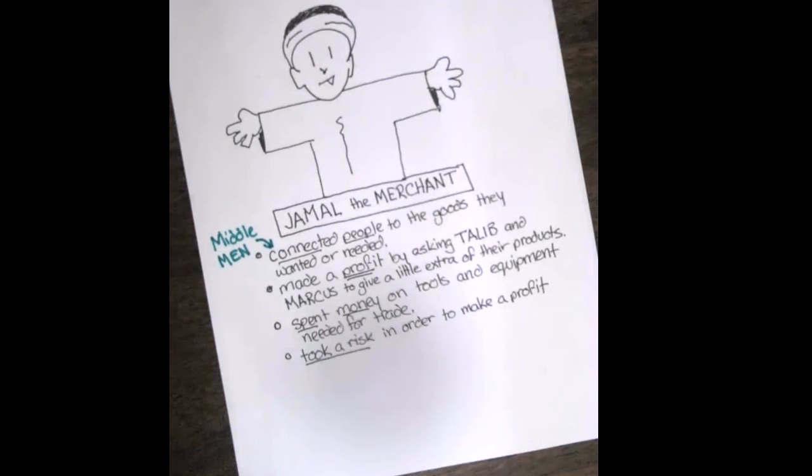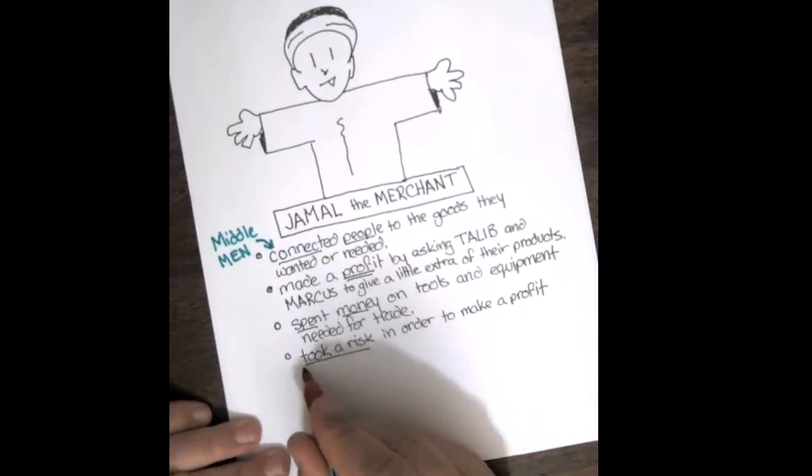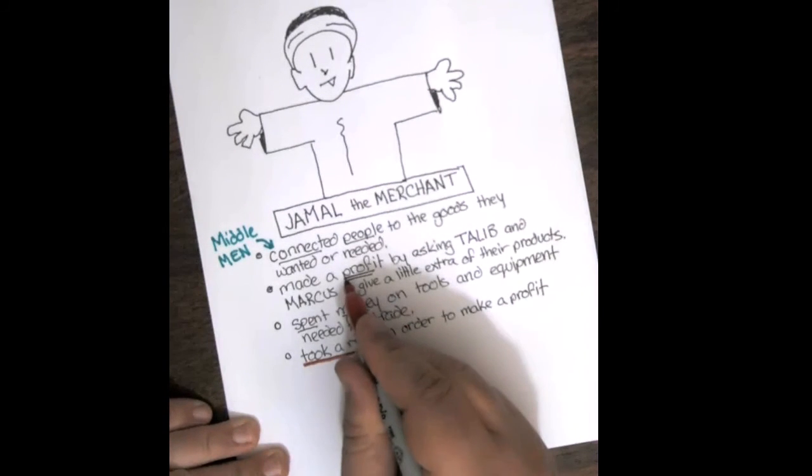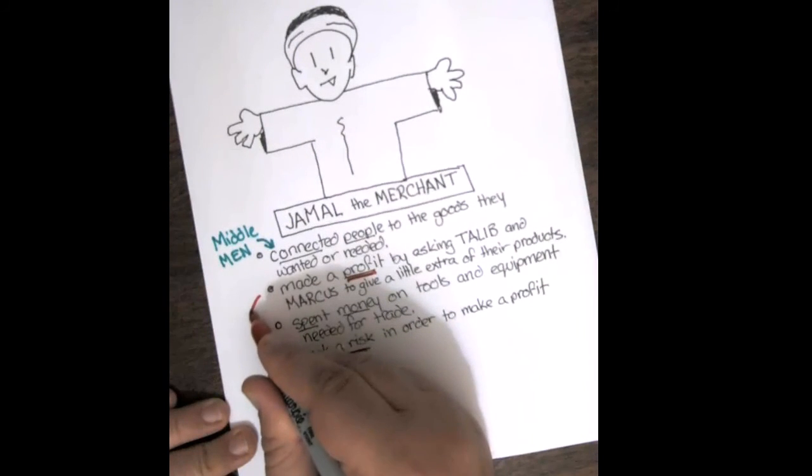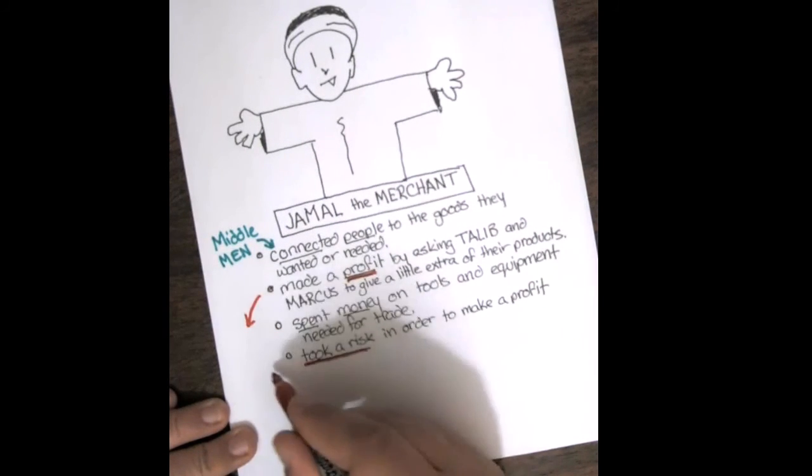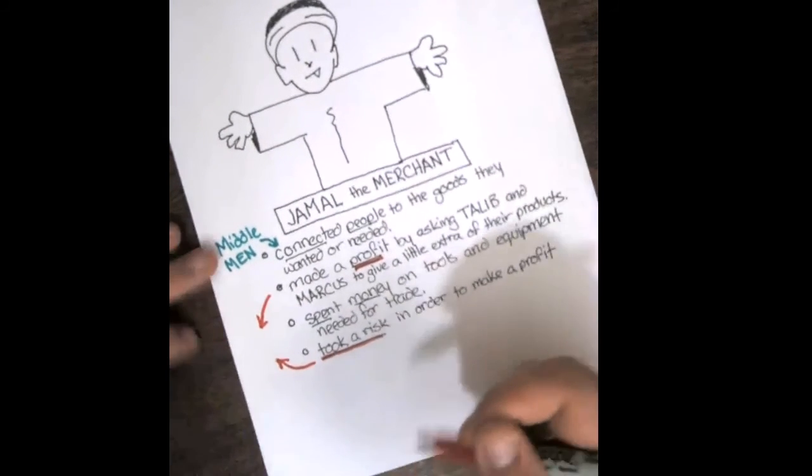Jamal is also making a profit and taking a risk. Do you remember what that makes him? He takes a risk. He makes a profit. What word do we use to describe people who take a risk in order to make a profit? You guessed it. Jamal is an entrepreneur.